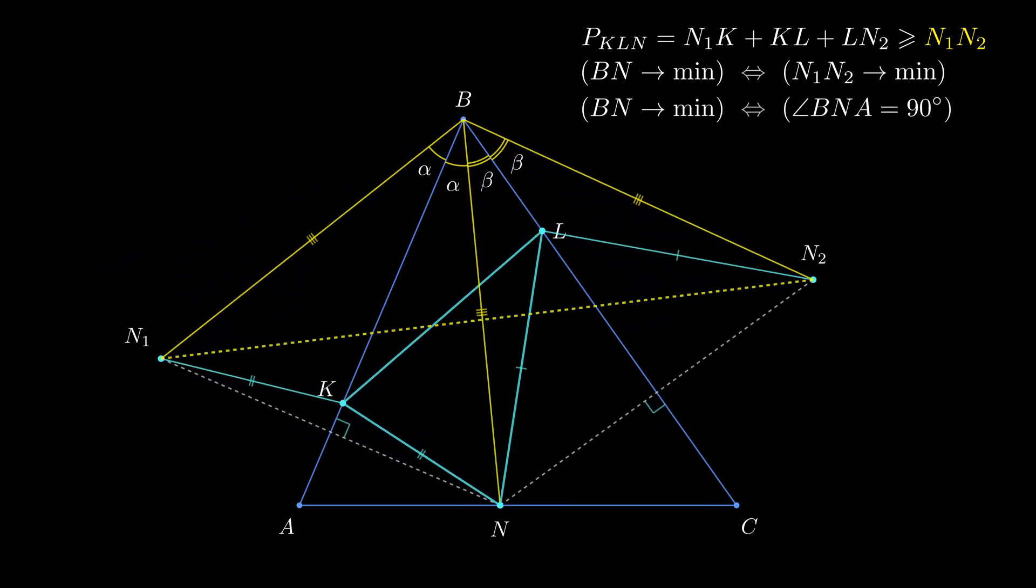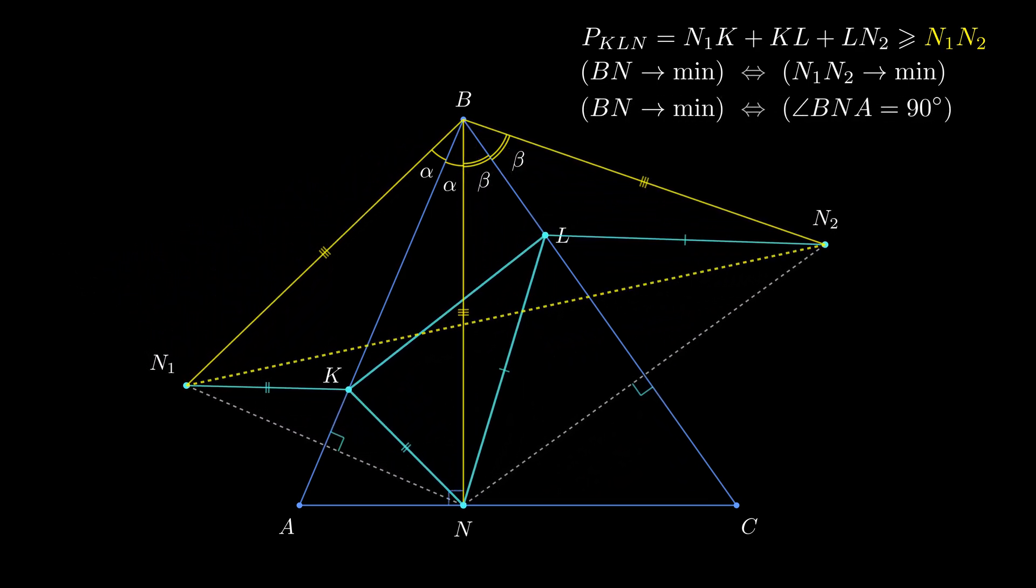Only when it is a height. We proved that the perimeter of the triangle is never smaller than N1N2. And N1N2 is minimal when N is the base of the height BN. Thus minimum achieved.